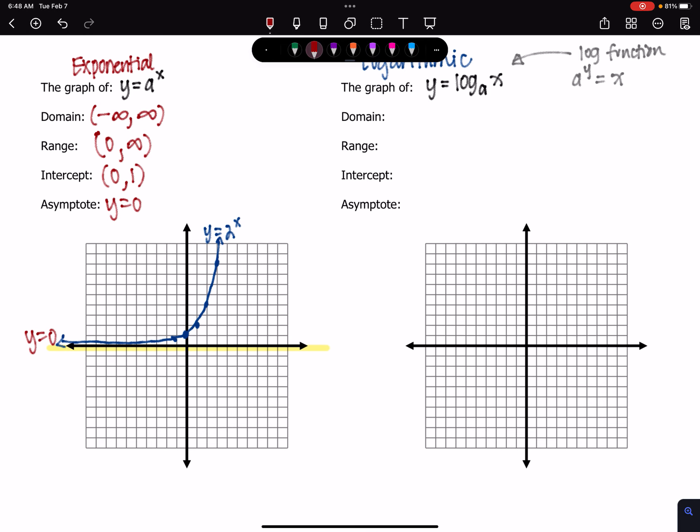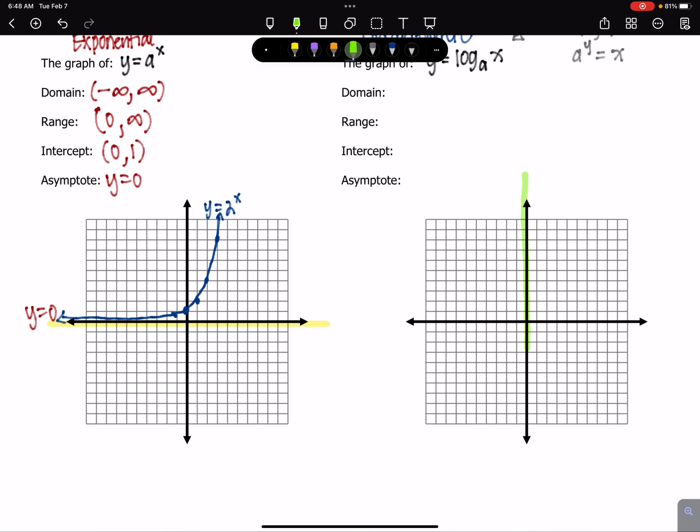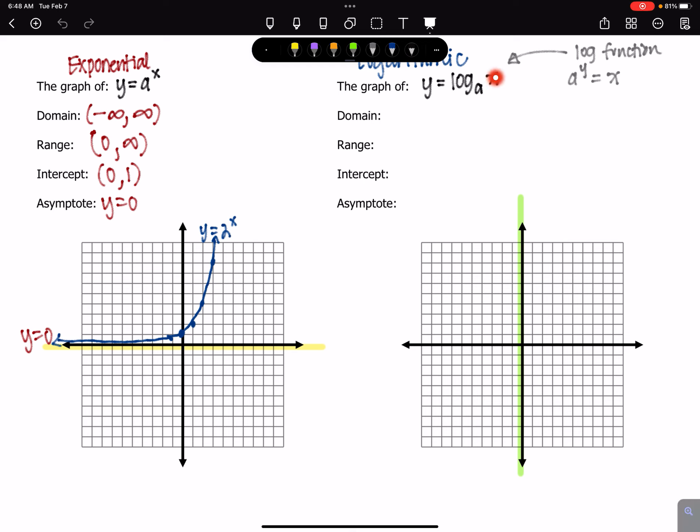Now the logarithmic graph is going to have a vertical asymptote. And its domain, if we look over here, its domain, remember the argument has to be positive, so it has to be 0 to infinity, not including 0. So look at that. The range of the exponential becomes the domain of the logarithmic. And the range, those are your outputs. Now remember, this output is your exponent, right? Your base raised to your exponent equals the argument. So the base raised to the exponent. The exponent can be any real number. So the range is negative infinity to positive infinity. The domain of the exponential becomes the range of the logarithmic.